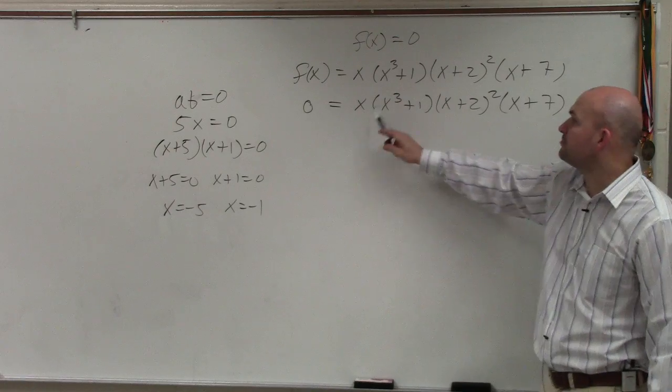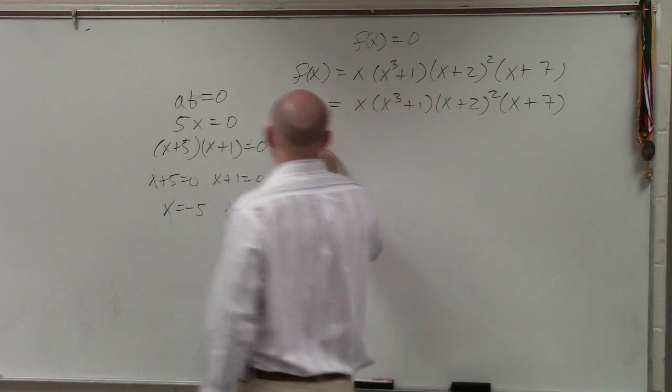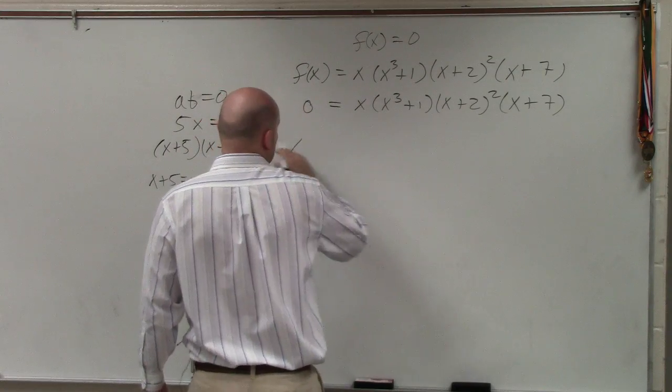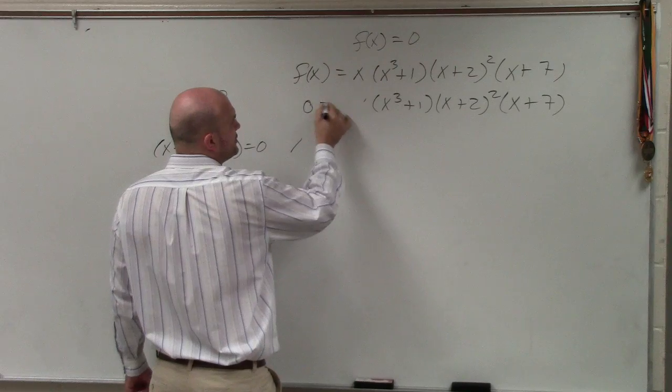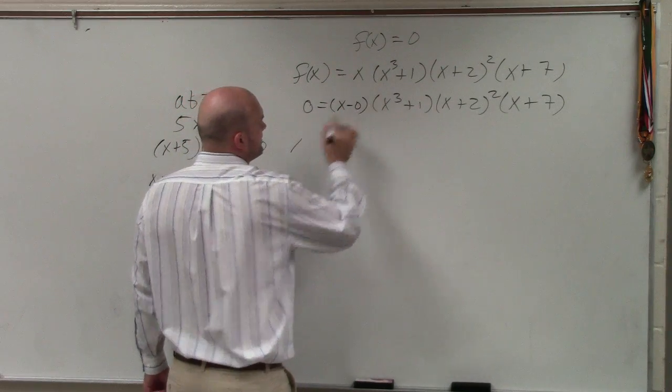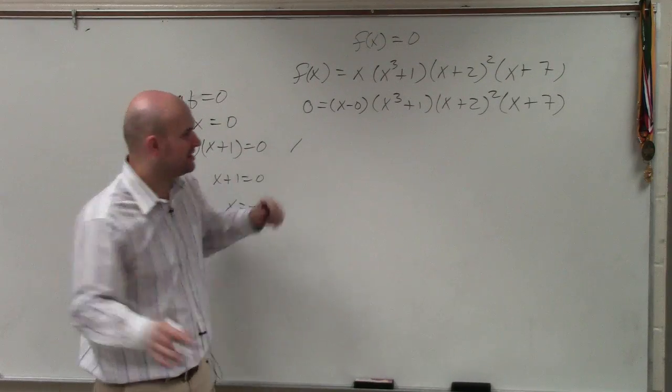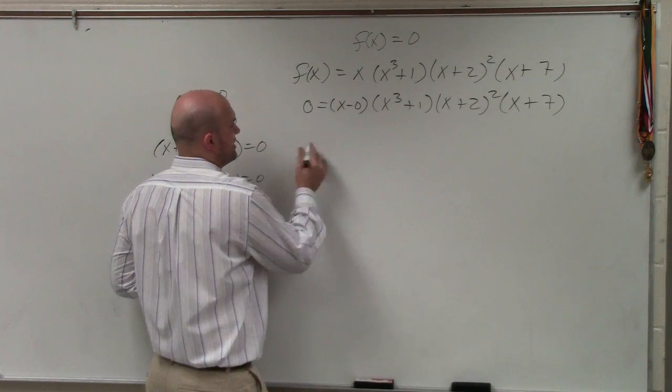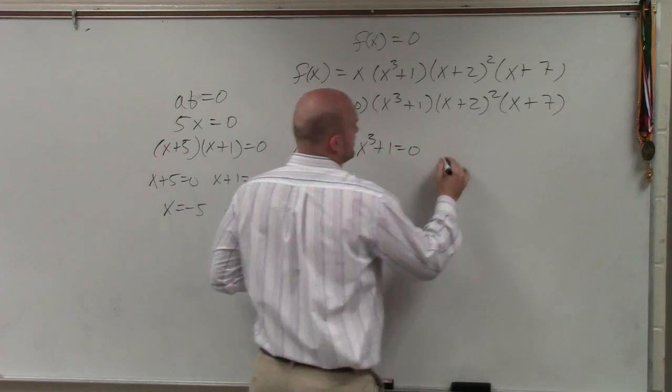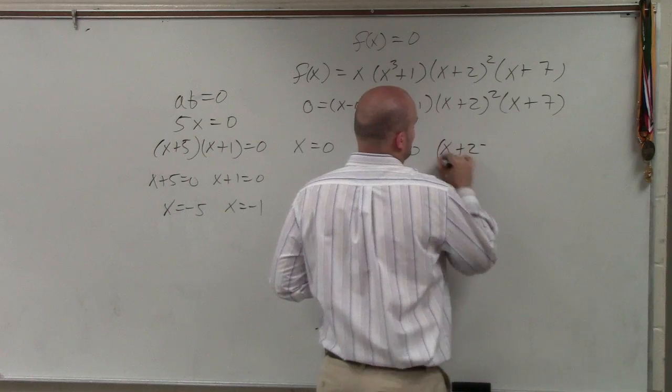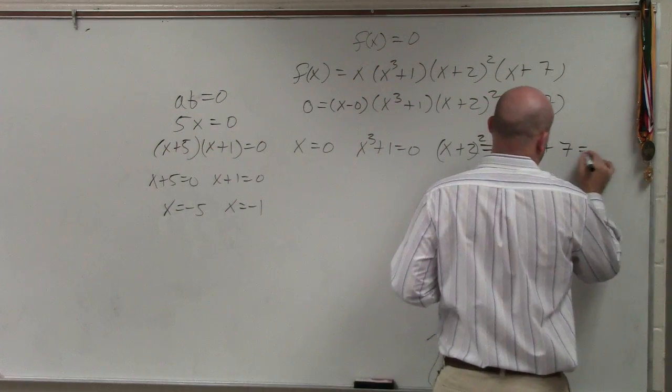So here, I have the product of four of them. So guess what? I have to set them all equal to 0. Now, one thing I'm going to show you guys, x, you could always rewrite this as x minus 0. Because what's x minus 0? x, right? I'm just going to kind of explain something to you. So anyways, we have x equals 0, x cubed plus 1 equals 0, (x+2) squared equals 0, and x plus 7 equals 0.